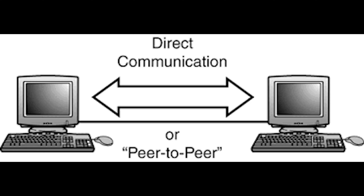First, you have peer-to-peer. P2P is the simplest network, created when two or more devices like PCs are connected and configured to share resources without going through a separate server computer. It is a decentralized network because resources and administration are handled locally on each participating machine. Each computer on this type of network may allow or deny access to other computers, as access to data and resources is controlled on each machine.